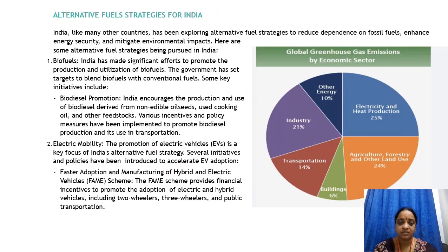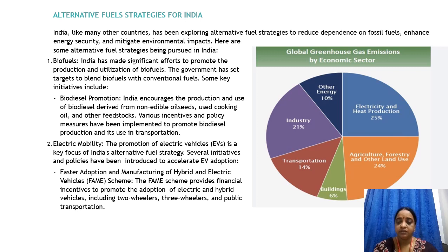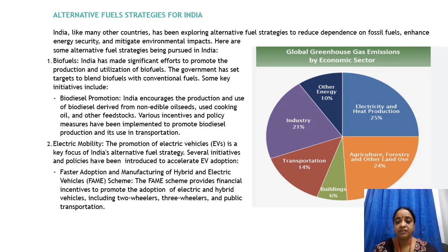Regarding alternative fuel strategies for India: from the image, electricity and heat production accounts for 25%, agriculture, forestry and other land uses 24%, industry uses 21% of energy, transportation uses 14%, and other energy-related uses account for 10%.